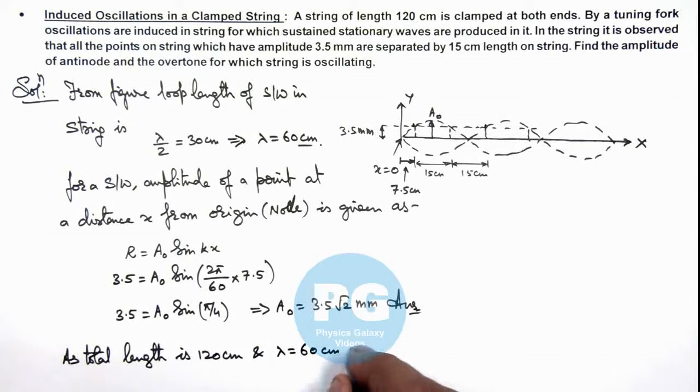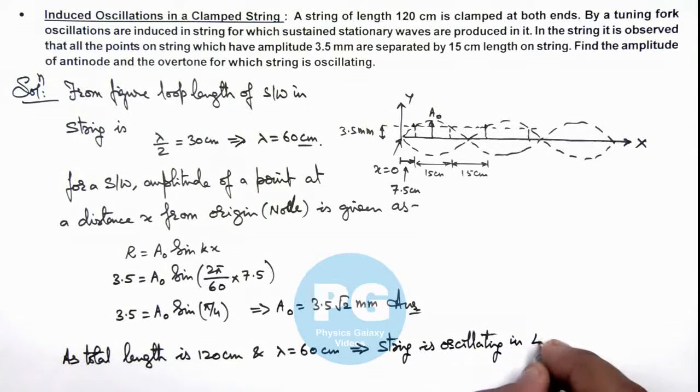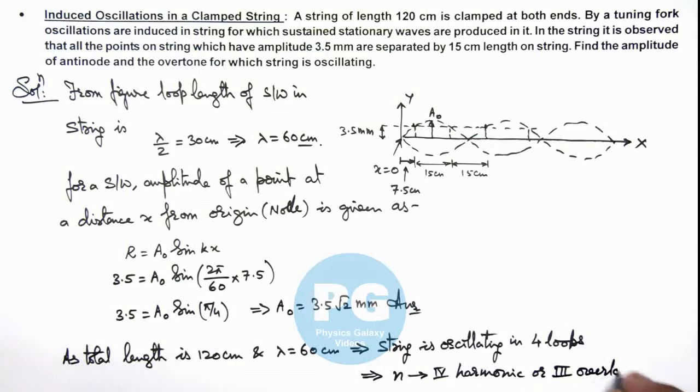This implies we can write the string is oscillating in 4 loops, which corresponds to the frequency of the 4th harmonic or the 3rd overtone of this string oscillation. That is another result of this problem.